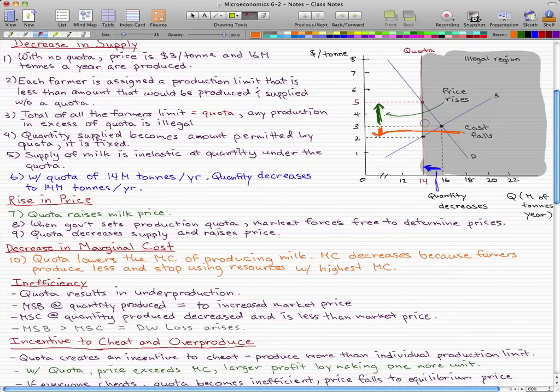So before, the marginal social benefit is equal to the marginal social cost. Now the marginal social benefit exceeds the marginal social cost. And from that, we can know that a deadweight loss arises, which is the gray area that we have here.